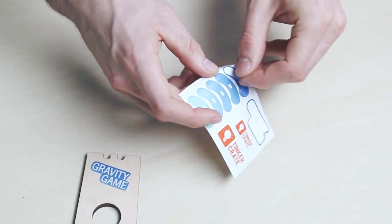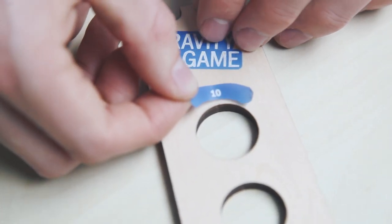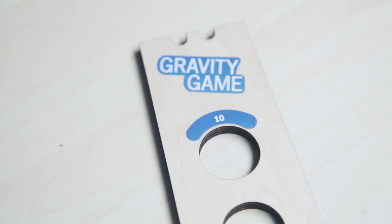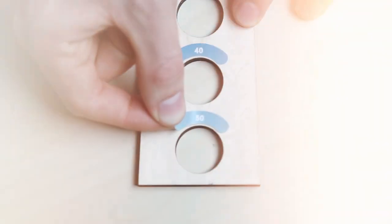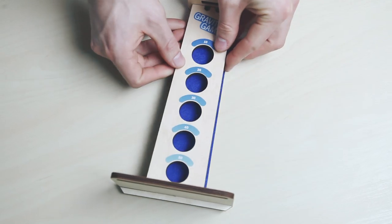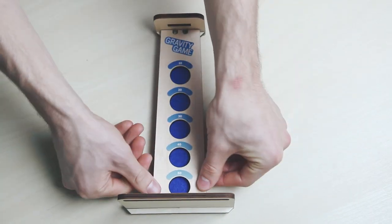Apply your stickers to the game board piece so that the 10 is around the circle at the narrow end and the 50 is around the circle at the fat end. Stick your game board piece down over the felt.